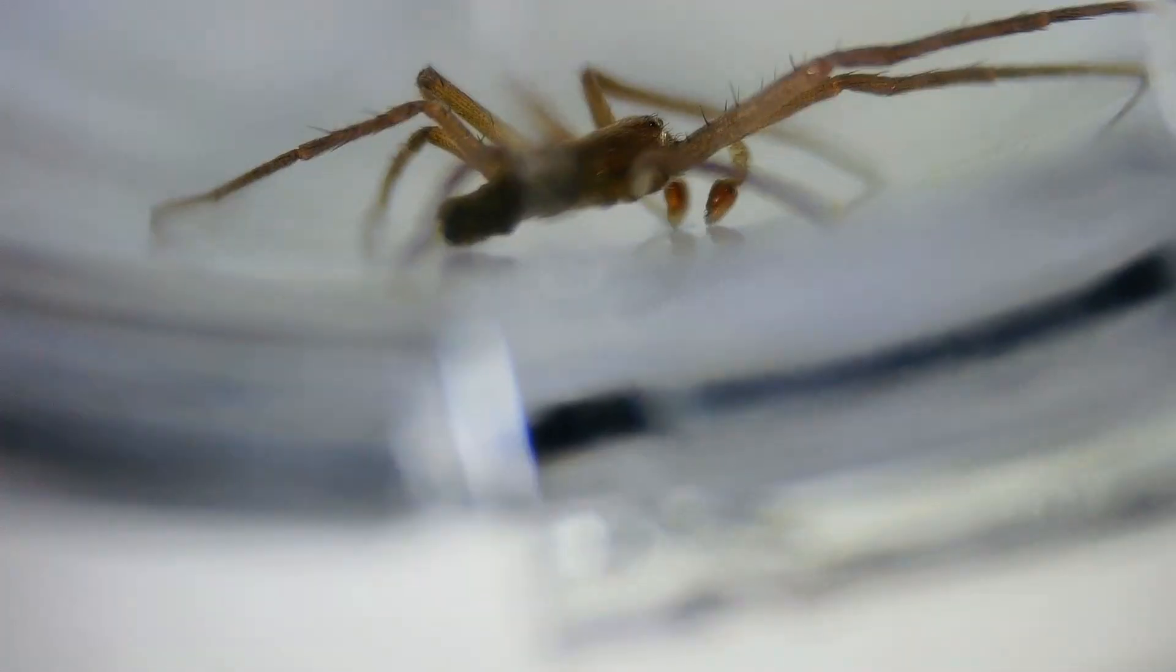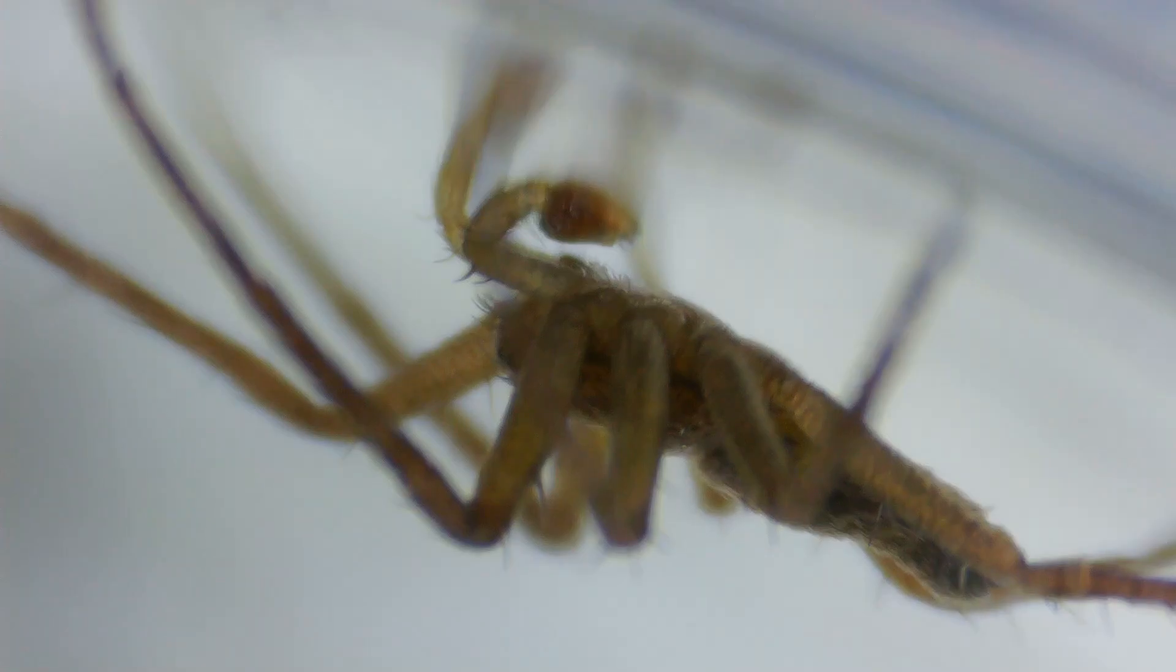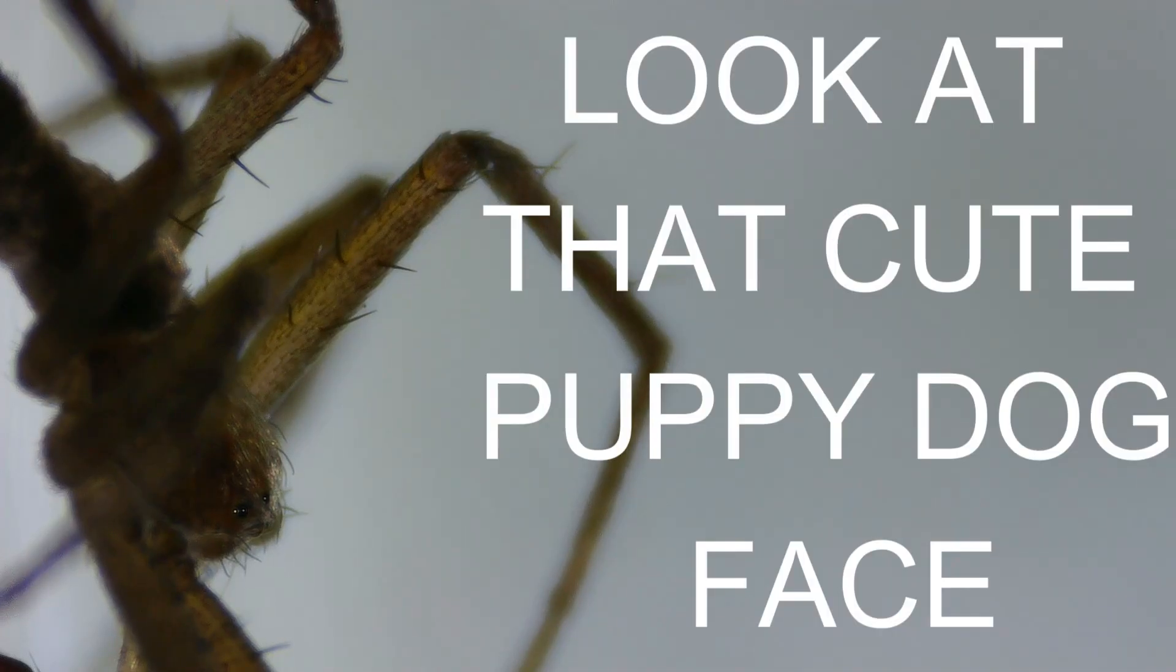Look closely at its body under the microscope. That round, bulbous abdomen, a soft tan and grayish color, is more than just a simple sack. It is a sophisticated biochemical factory. Within it, the spider produces silk.